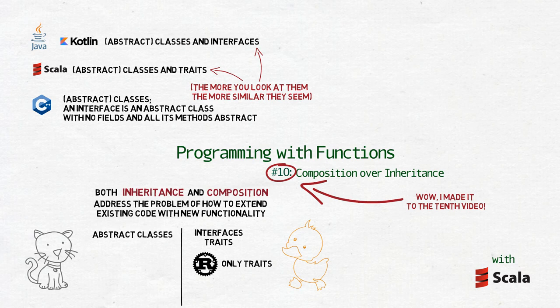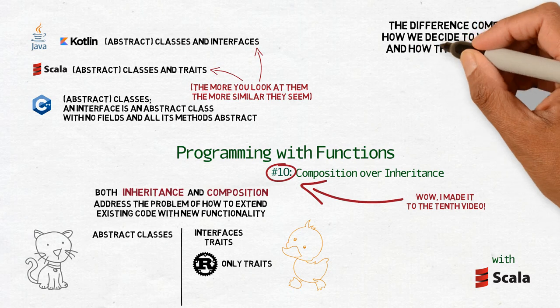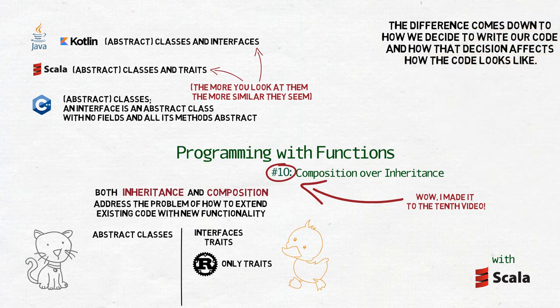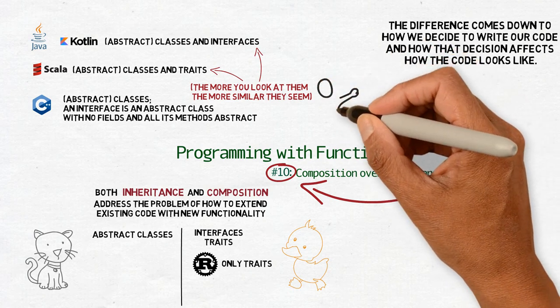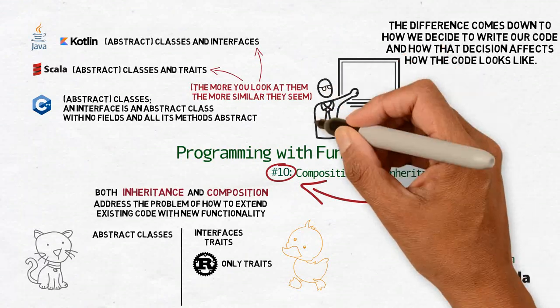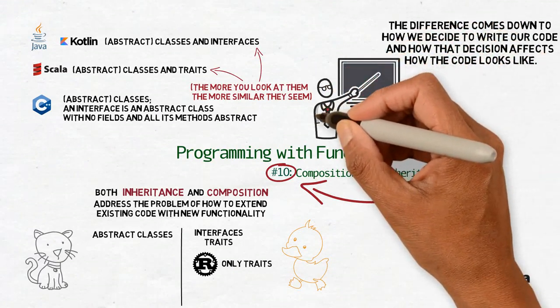So again, just like in the chapter about expressions versus statements, the difference comes down to how we decide to write our code, and how that decision, hopefully made in the early stages of that development affects how the code looks like. And to be honest, it's not even so much about which one do we use, but rather how we use them. Even in the code written from scratch with composition in mind, we can sometimes find an abstract class.